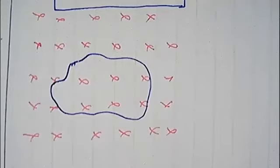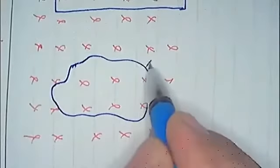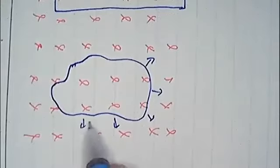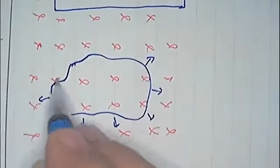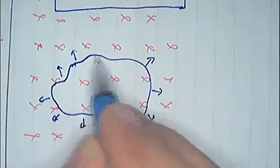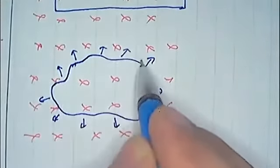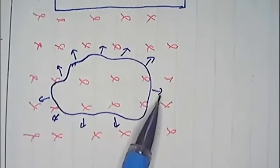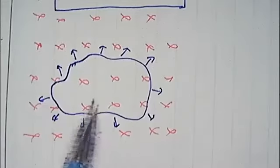This loop is start expanding. This loop is start expanding outside. Will there be any current induced in the loop? What will be the direction of current?